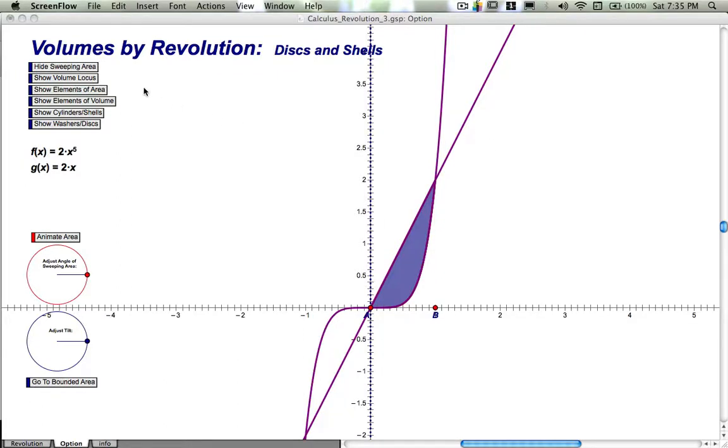In this video, we're looking at volumes by revolution. These are volumes that are formed when we revolve a region of area around a vertical or horizontal axis.